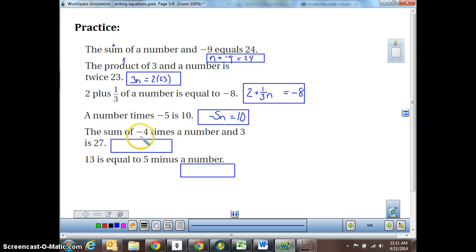The sum, that's adding, of a negative 4 times a number and 3 is 27. So again, this one's a little more difficult, but I know that is 27 means equals 27. The sum, so I'm going to be adding, of a negative 4 times a number and 3. So I'm going to have a negative 4 times a number plus 3 equals 27.